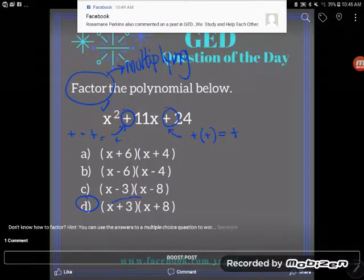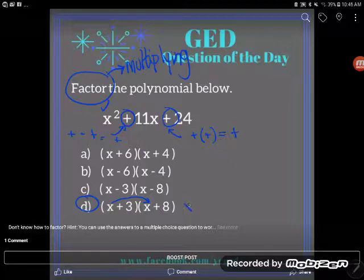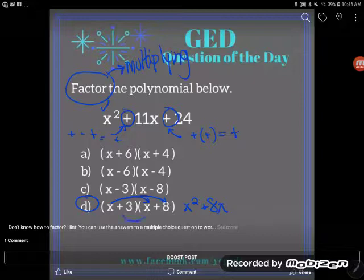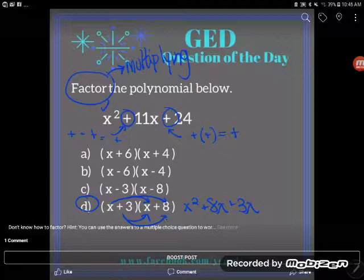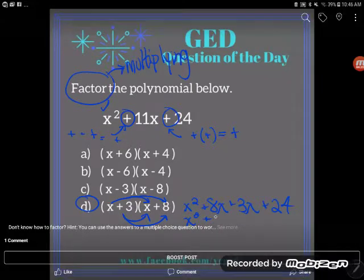So again, I'm going to multiply through. X times x is x squared. X times positive 8 is positive 8x. A positive 3 times x is positive 3x and positive 3 times positive 8 is positive 24. So I get x squared plus 8x plus 3x gives me plus 11x and plus 24.